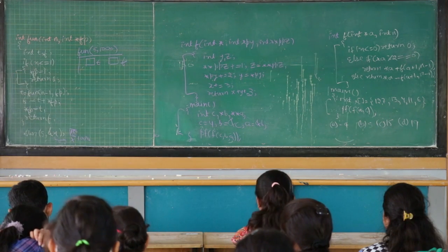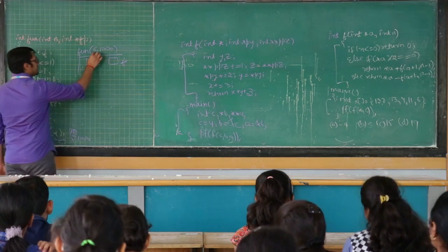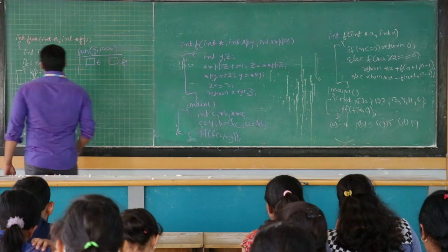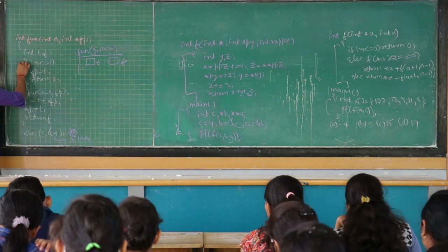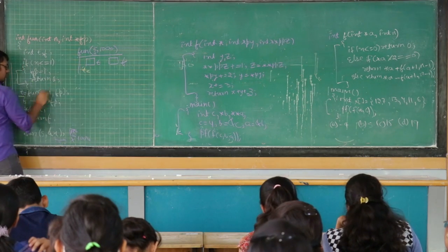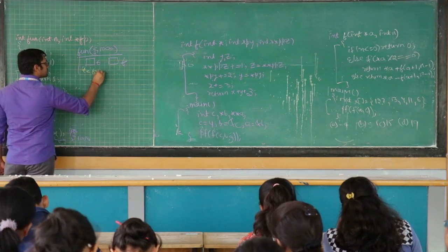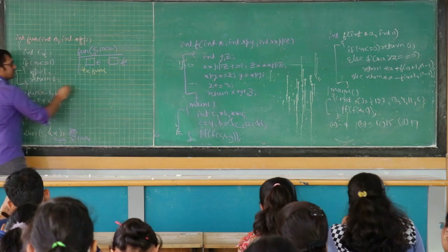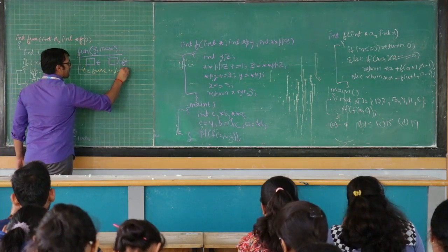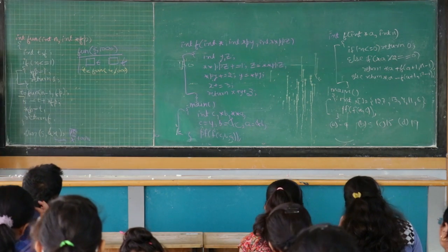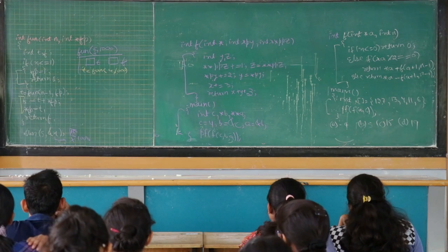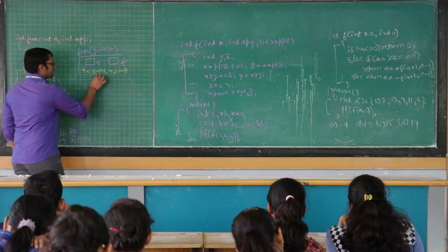If n is less than or equal to 1, what is the value of n? It is 5, and 5 is not less than or equal to 1, so this condition is false. We are going to go to the next statement which says t is equal to fun of n minus 1, that is 4, and fp, that means 1000. We cannot execute any statement after this until we find the value of t, so again there is a recursive call here.